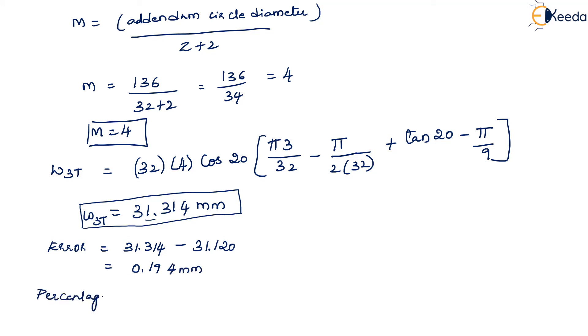Now the percentage of the error: error divided by this width value, 0.194 divided by 31.314, that is 0.006 percent. So this is how we calculate the span width. Thank you.